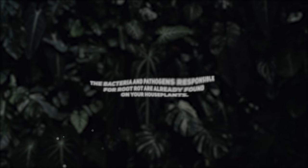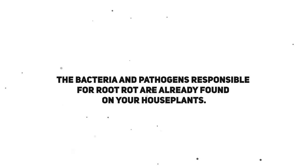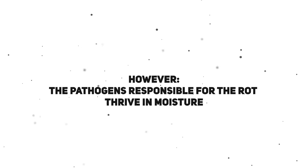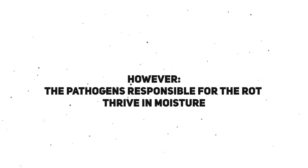But let's get a little bit more specific on what is causing this rot. Root rot can be caused by a variety of viruses, bacteria and fungi. The bacteria and pathogens responsible for root rot are already found on your house plants — they are always there. It's not something that you catch; they are always there, just the same as almost any surface in your home harbors bacteria. This in itself isn't actually a problem because the effects of the bacteria are balanced out by the plant's natural defenses, much in the same way that we have an immune system which protects us from various illnesses. However, the pathogens responsible for the rot thrive in moisture, which is why overwatering or insufficient drainage can dramatically increase the chances of rot.